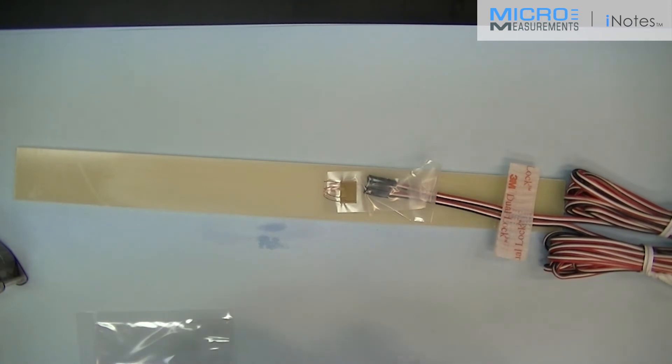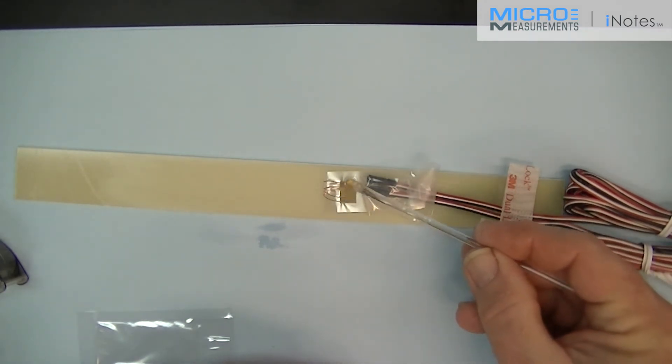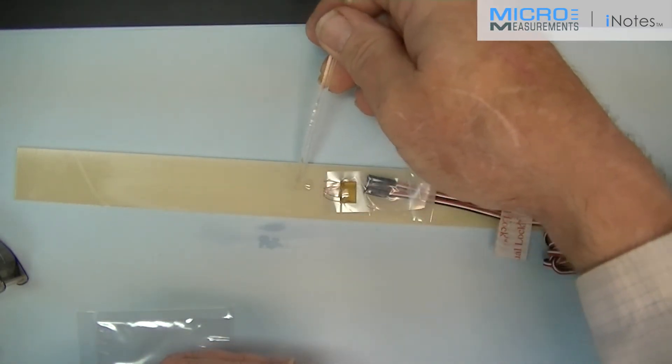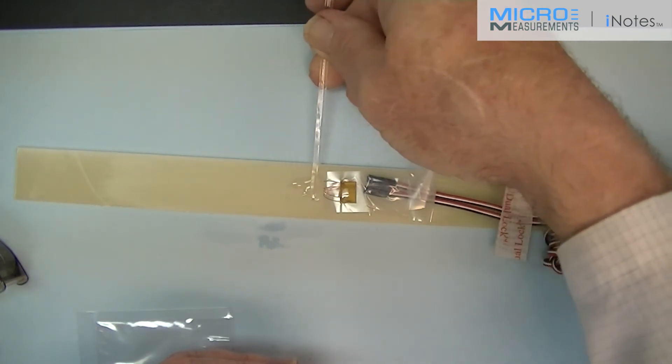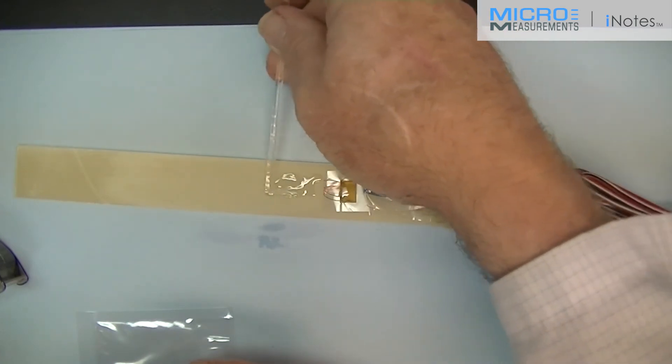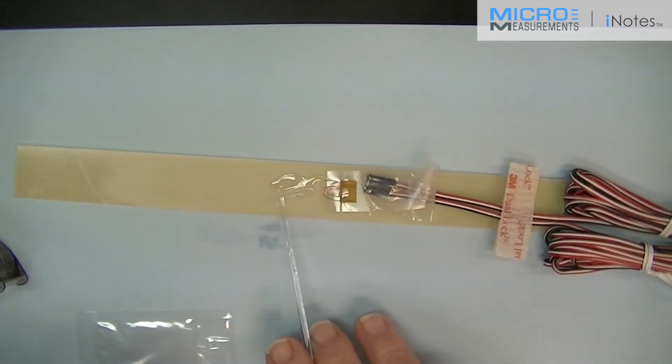The previously mixed AE-10 will now be applied both to the backing of the gauge and to the surface of the part. We're going to make sure both are thoroughly wetted so that you'll be sure and have a good bond. Be sure to cover a significant area, maybe bigger than you think, so that you have both surfaces wetted. Make sure you cover a big enough area on the part.